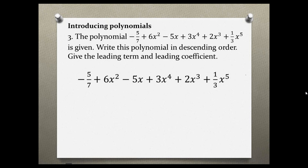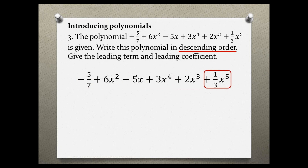Let's start off with our polynomial and we are asked to organize it in descending order. Descending order means we are going to look at each individual term, determine the power, and start reordering them from highest power to lowest power.